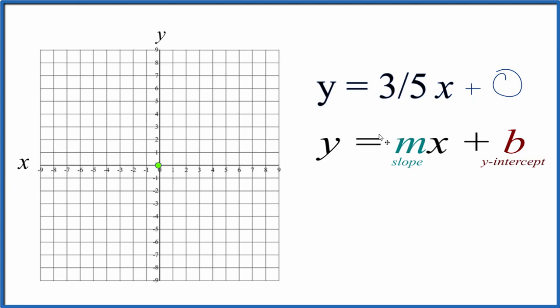For the slope m, that's three-fifths. And you can think about this as a rise over run.